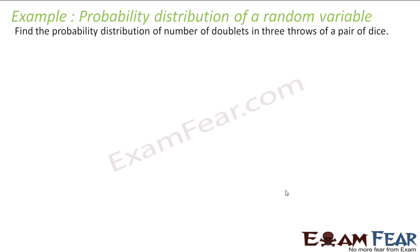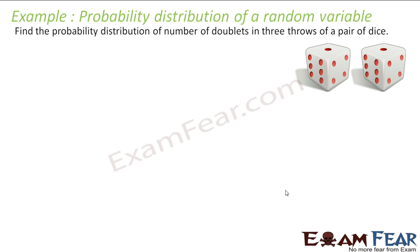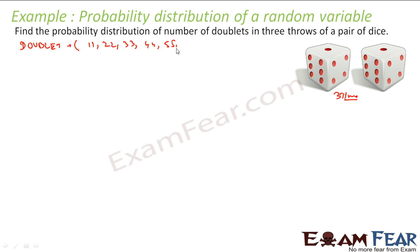Let's find the probability distribution for the number of doublets in three throws of a pair of dice. We throw this die three times. A doublet means getting the same number on both dice - that is 1-1, 2-2, 3-3, 4-4, 5-5, or 6-6. We define the probability distribution of the number of doublets.